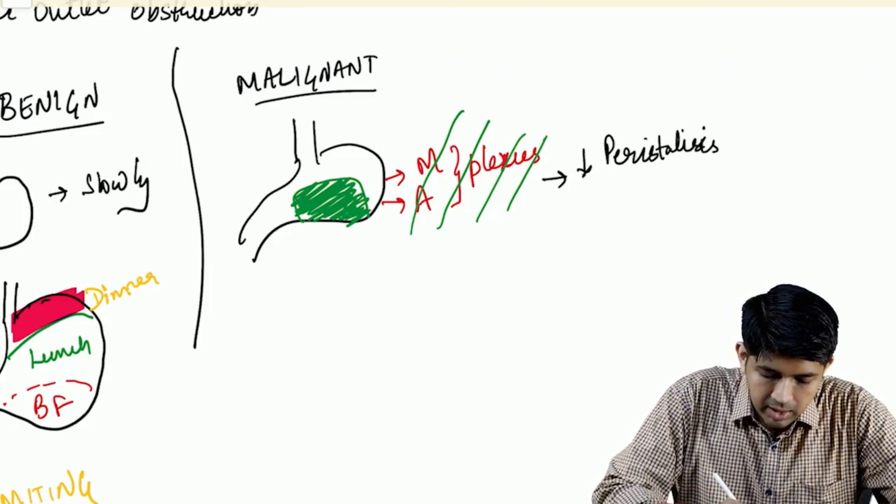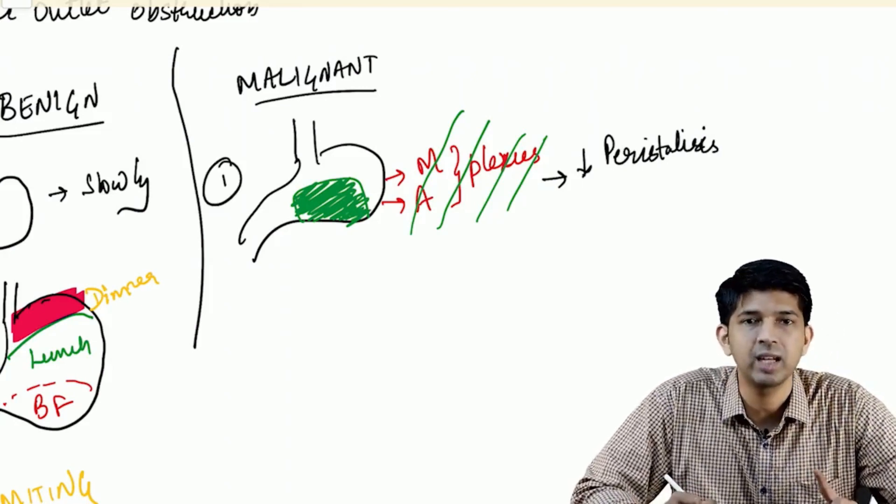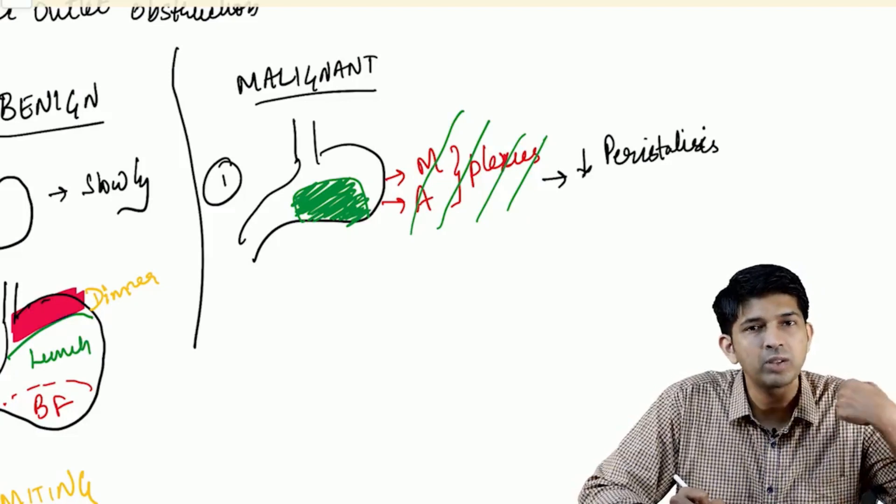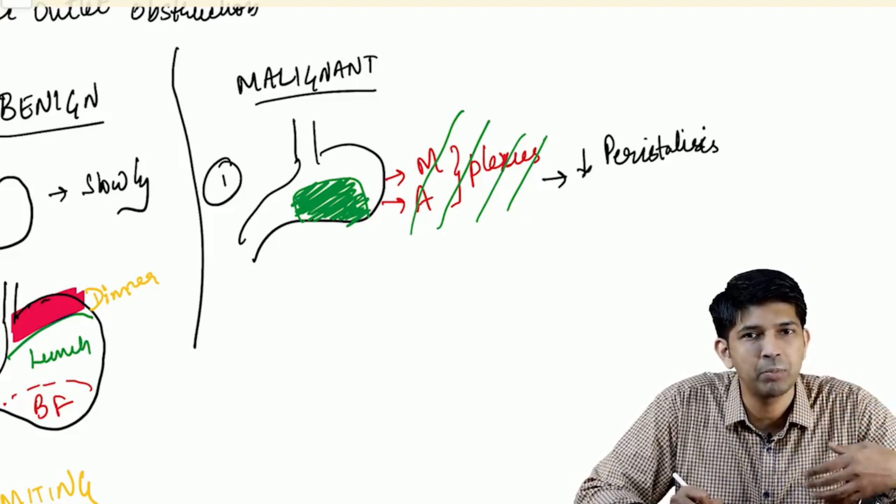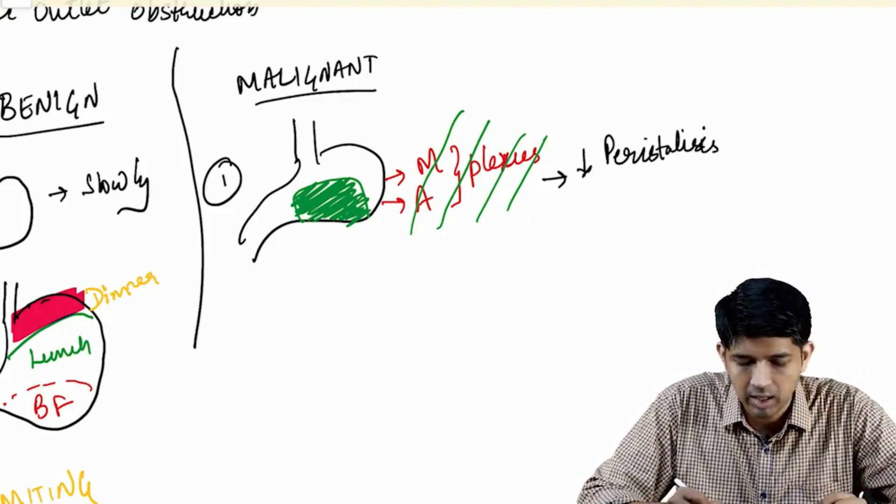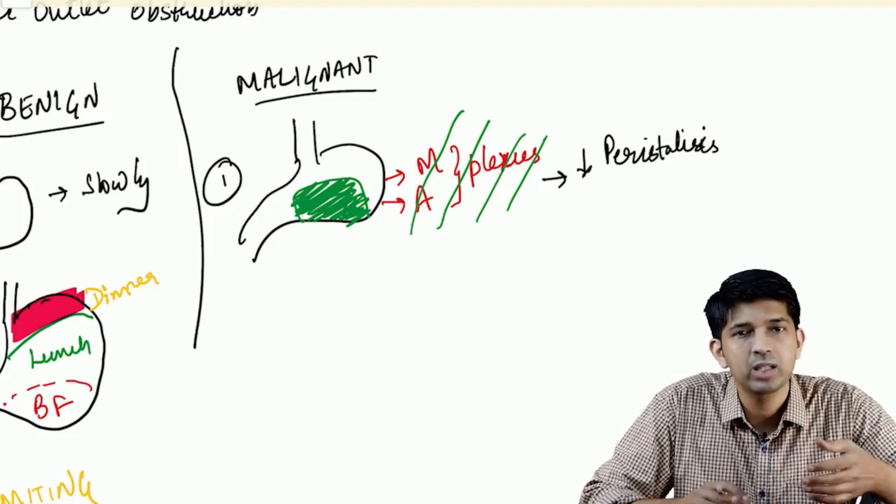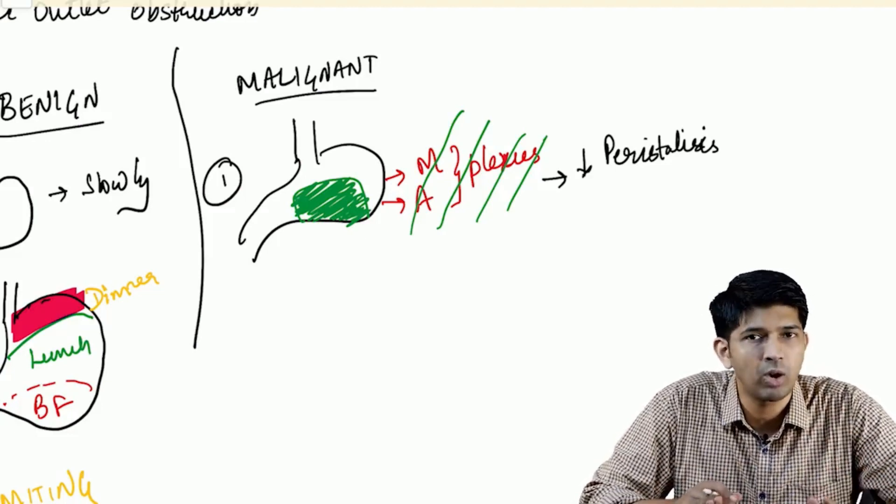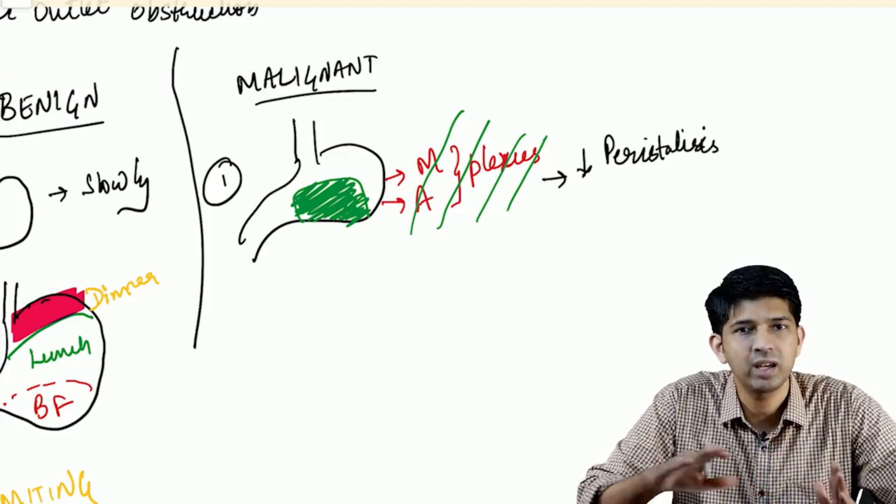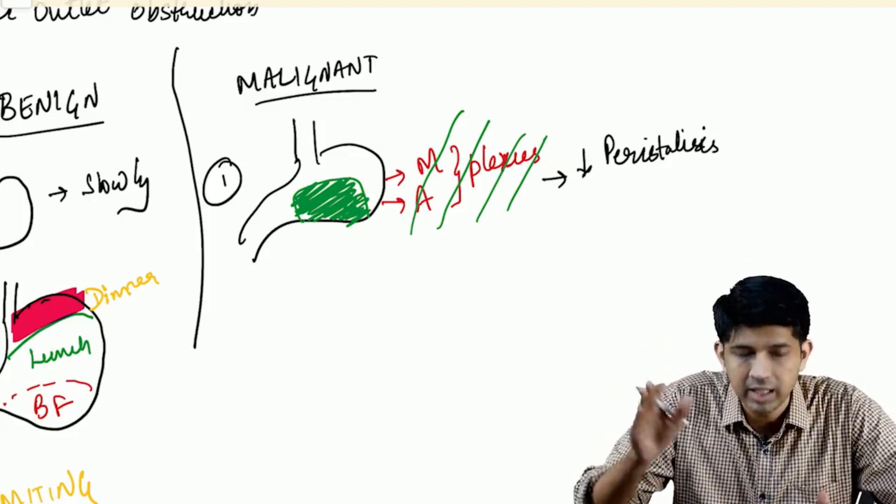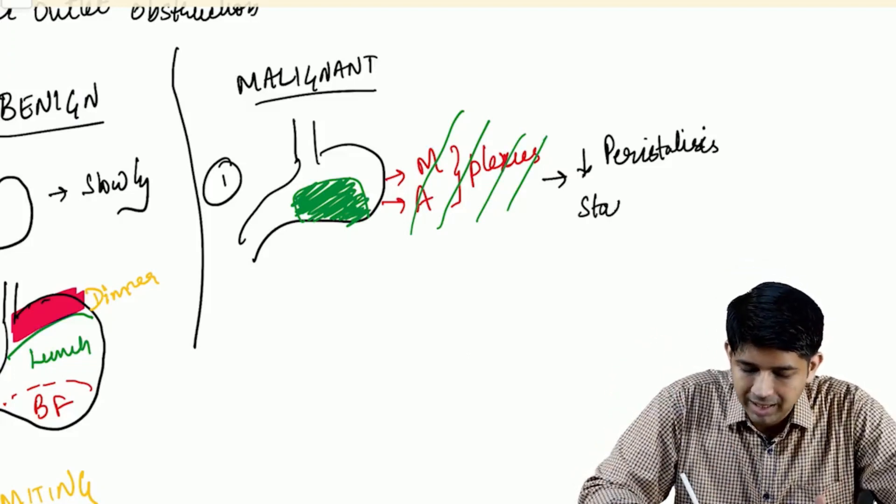This is the first concept you need to understand: there is reduced peristalsis in a case of CA stomach because the cancer infiltrates into the stomach wall. The stomach wall contains both the mesenteric and Auerbach plexus, and once these are infiltrated, there will be decreased peristalsis. So there will be stasis of food.